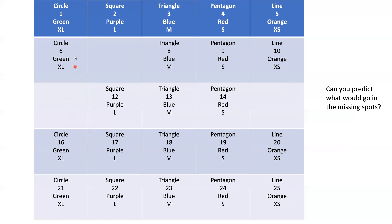So for this one, it's going to be circle, 11, green and extra large; square, 7, purple and large; and then line, 15, orange and extra small.